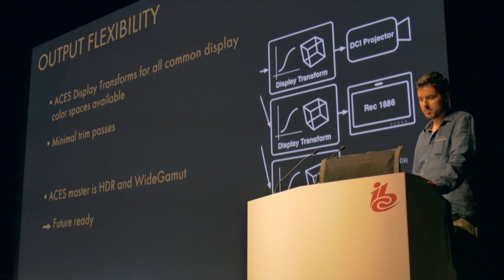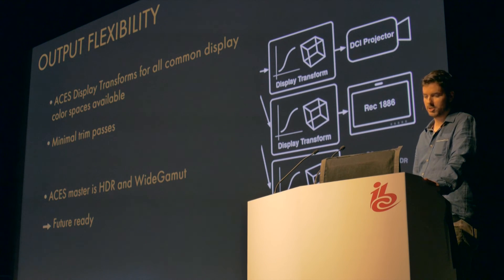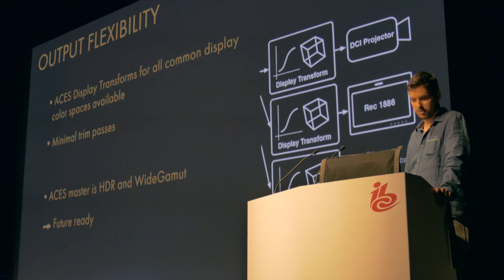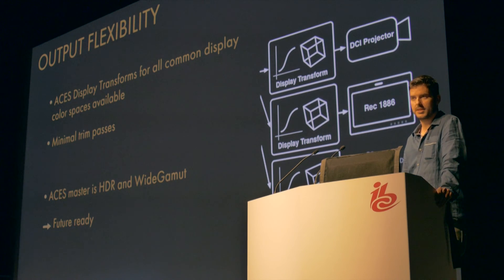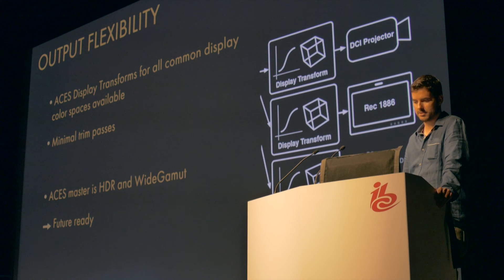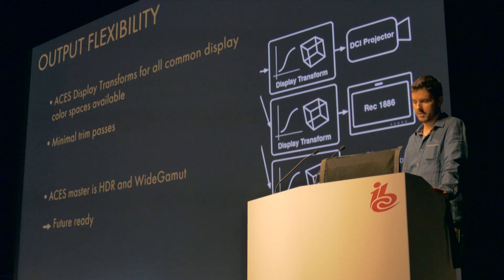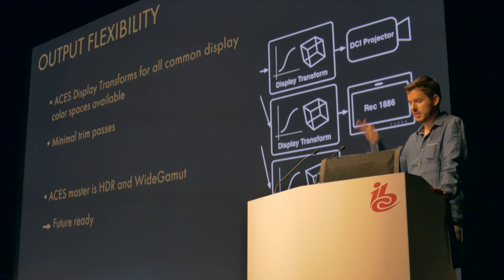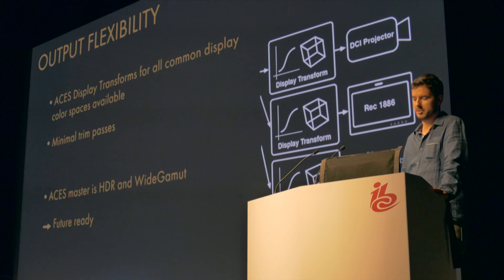The most important thing on the output side is that ACES is an HDR and wide gamut color space. If you're working on a show today and rendering out an ACES master, and you want to remaster it to HDR in one or two years, you don't have to start from the beginning — the full dynamic range of the camera is still inside the master. You have the full gamut, nothing is lost. You're not limited to the display used for the color grading. You may still need a trim pass, but you don't have to redo the whole film.